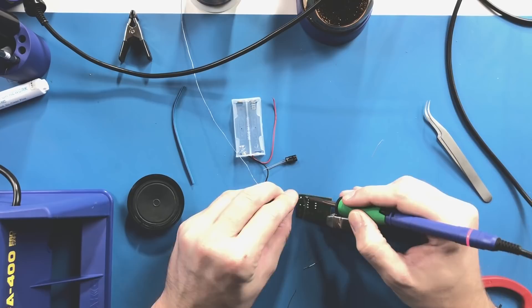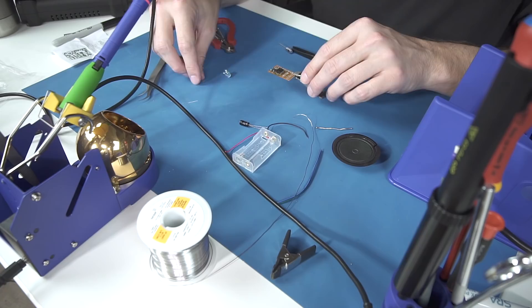Next up is the little ceramic capacitor. Again, this guy is not polarized, so you can just stick him in, crop the legs, and solder.